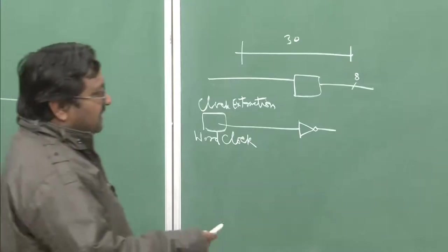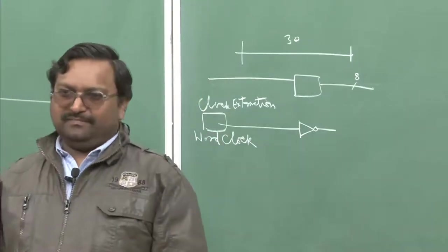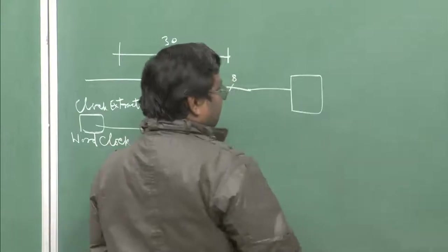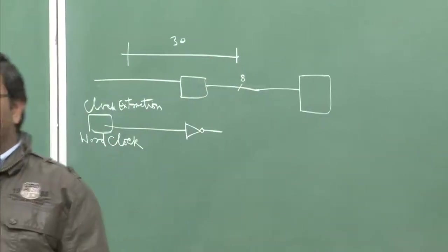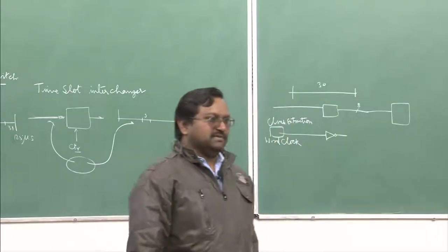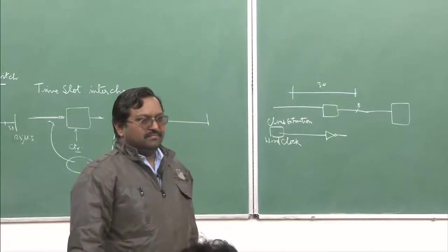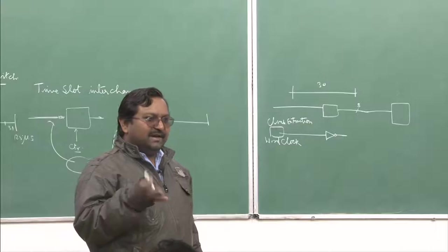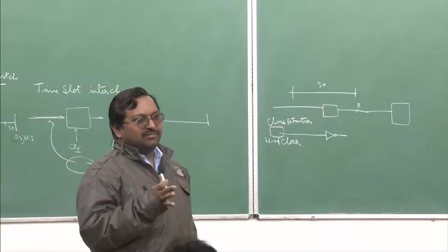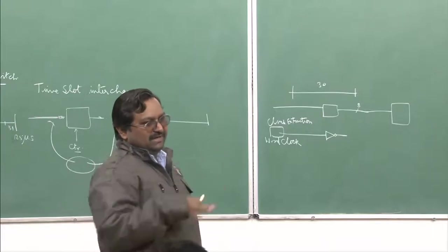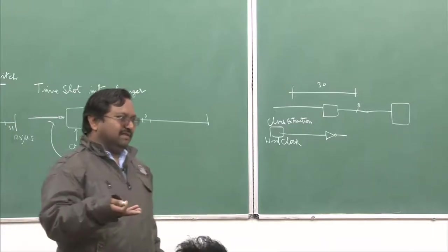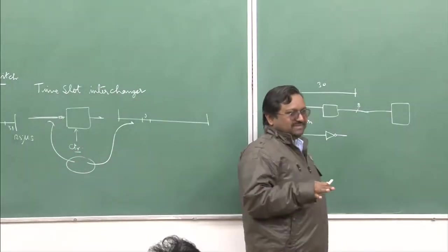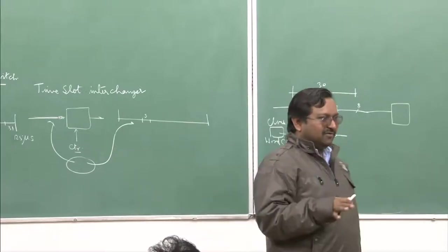These words coming in need to be written into memory, so we will use a random access memory. Technically, data-in and data-out are from the same bus in an actual RAM — not from different buses. When in read mode, the same bus is used for reading; in write mode, for writing. I am showing them separately for clarity, but technically it is the same bus.